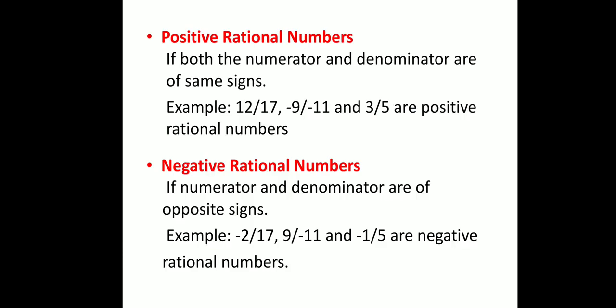Now let us look at the types of rational numbers: positive rational numbers and negative rational numbers. Positive rational numbers are those where both the numerator and denominator have the same sign — either both positive or both negative. For example, 12/17 has a positive numerator and positive denominator (same signs), so it is a positive rational number. Similarly, −9/−11 has both numerator and denominator negative (same signs), so it is also a positive rational number. Likewise, examples like 3/5 and −3/−5 follow the same pattern.